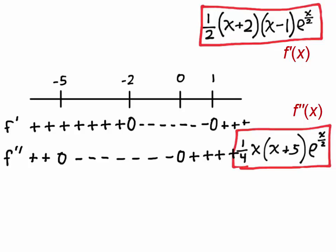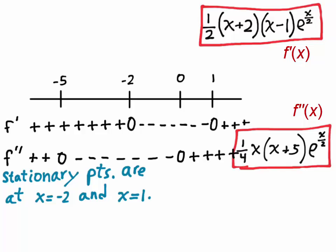And from these sign charts, you can determine that the stationary points of this function are at x equals negative 2 and x equals 1, that's where f prime is 0, and that the interval on which the function is decreasing is the interval from negative 2 to 1.